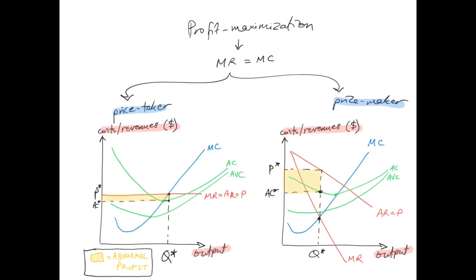Let's talk about the profit maximization rule. Economists say that maximum profit is achieved at the level of output where marginal revenue equals marginal cost. For a price taker, the marginal revenue, average revenue, and price form a horizontal straight line. Where that line intersects the marginal cost curve, you go down to the x-axis to find Q-star — the profit-maximizing level of output. The difference between the price and average cost, multiplied by quantity, gives the abnormal profit shown as a rectangle on the diagram.